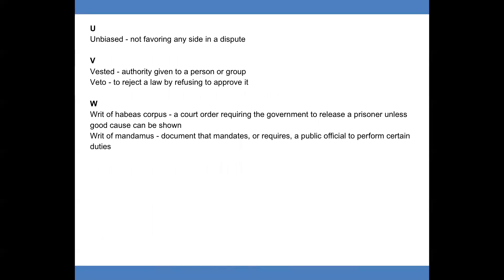U. Unbiased: not favoring any side in a dispute. V. Vested: authority given to a person or group. Veto: to reject a law by refusing to approve it. W. Writ of habeas corpus: a court order requiring the government to release a prisoner unless good cause can be shown. Writ of mandamus: a document that mandates or requires a public official to perform certain duties.